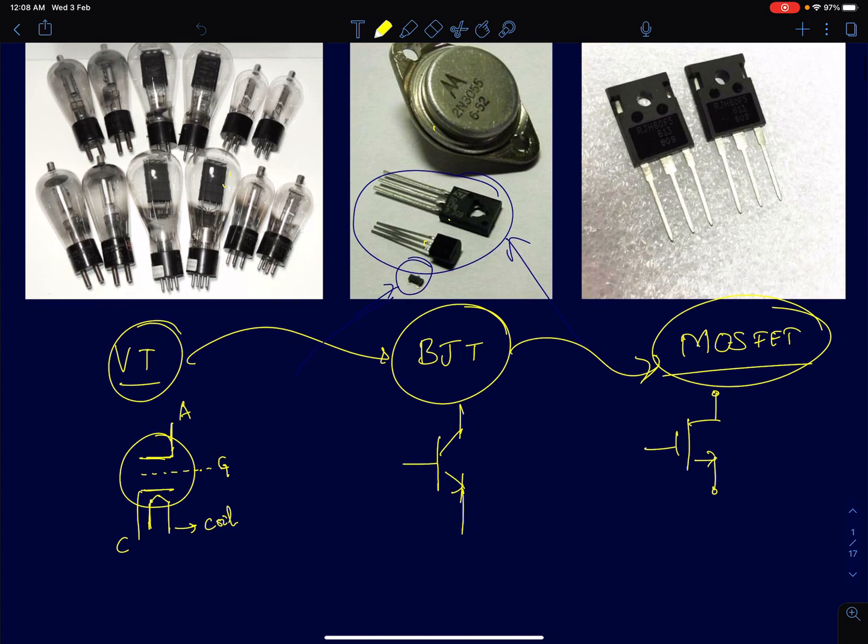For example, one of the popular amplifier configurations is this cascode. The idea of cascode amplifier was invented when engineers were designing circuits using vacuum tube amplifiers, which is shown here. Then we applied the same idea of cascoding in BJT, bipolar junction transistor amplifiers, and then in MOSFET-based amplifiers.